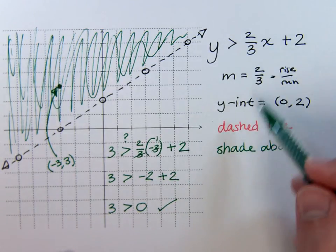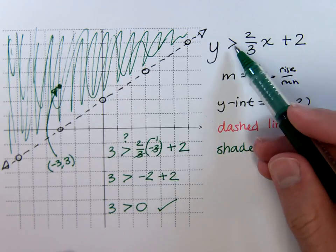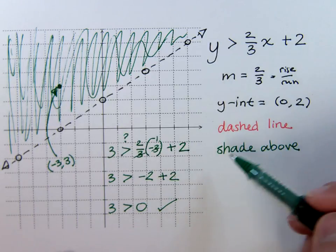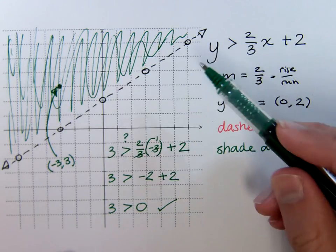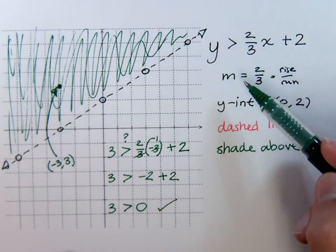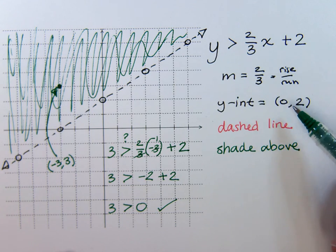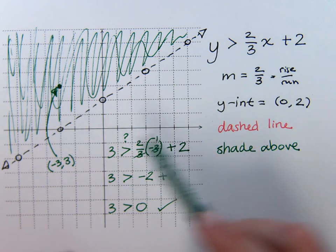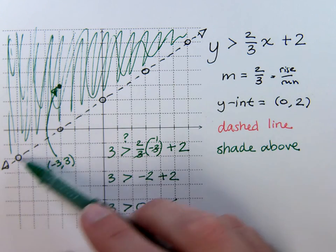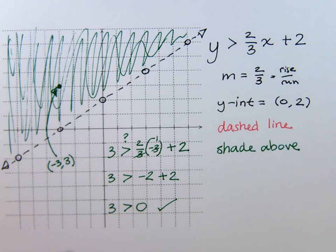It was a dashed line because it was just greater than, shaded above because y is greater than. You had your slope, your y-intercept — put all the pieces together and you've got your solution. Thank you.